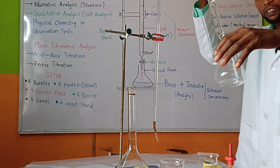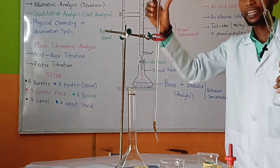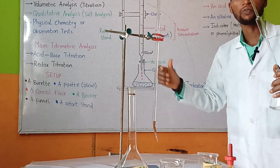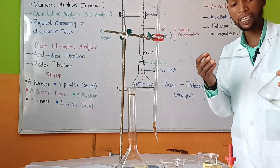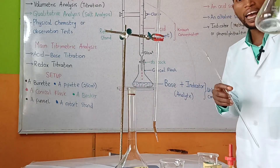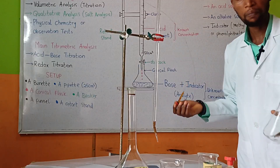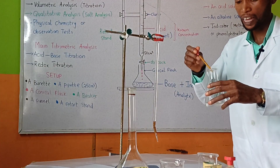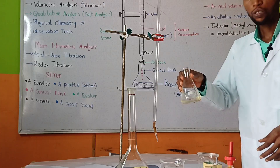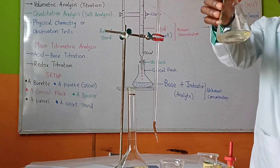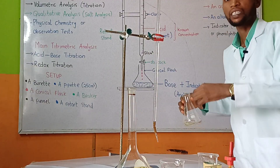I introduce the pipetted solution into the dry conical flask. The conical flask has been rinsed with the solution of the base. Also, before clamping the burette, I rinsed it with the solution of the acid. The solution to be placed in the burette is used to rinse the burette, while the solution to be pipetted is used to rinse the conical flask. Now I add two to three drops of methyl orange indicator — one, two, three.